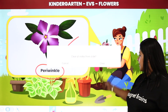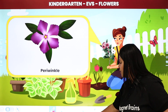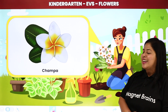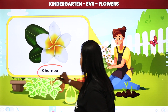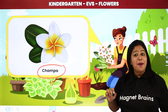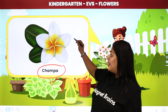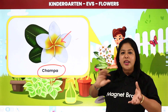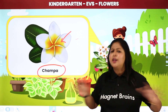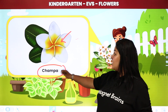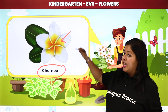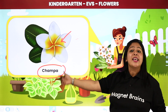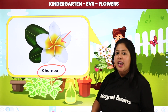Thank you Lisa. Ab hum kaun sa flower dekhne wale hain? So student, now guess — this is which flower? Yes, this is a beautiful flower known as champa. Bahut sundar flower hota hai student. White color ka flower hota hai, aur iske middle mein yeh yellow-yellow shade hota hai. So it's a combination of white and yellow. This is known as champa — C-H-A-M-P-A. Toh kabhi bhi jab aap aise flower ko dekhein, jaldi se guess karna: this is champa.